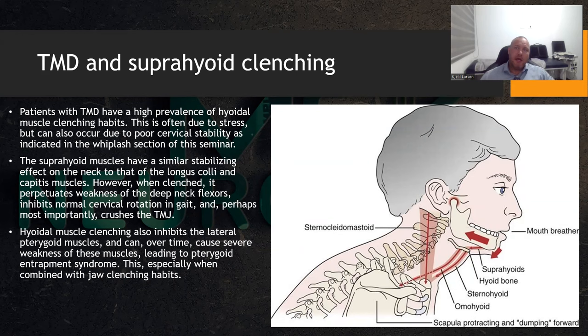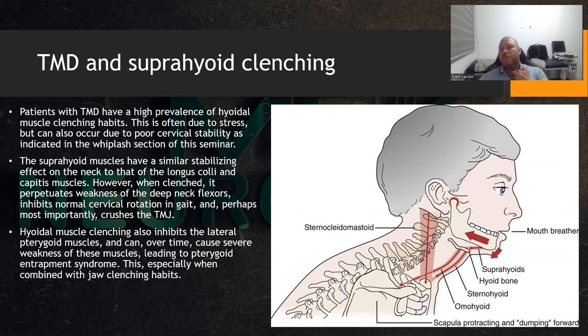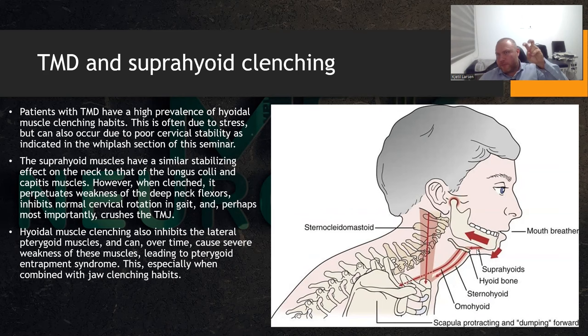Temporalis and masseter — the typical jaw clenching — most people understand that. Something that there's almost no information on is suprahyoid or hyoid muscle clenching. The hyoid muscles open the jaw and protect the neck. What I've seen over the course of years is that when people have stress or cervical instability — muscle damage in the neck making it weak — very many of them end up clenching those suprahyoid muscles.